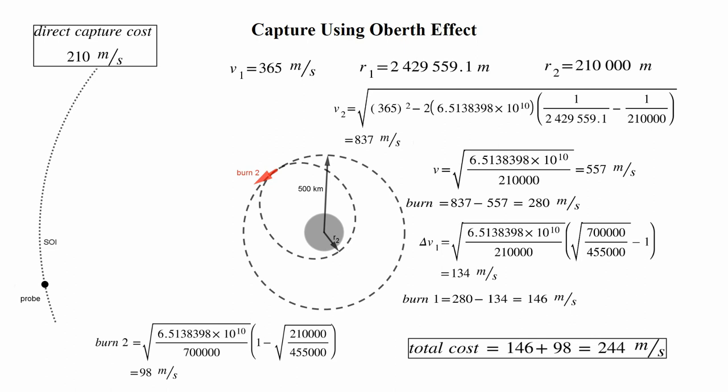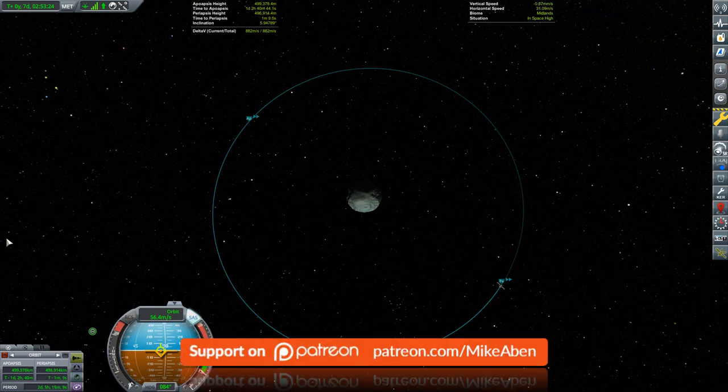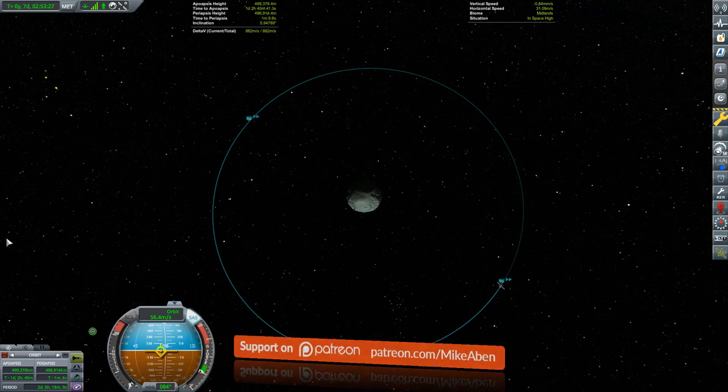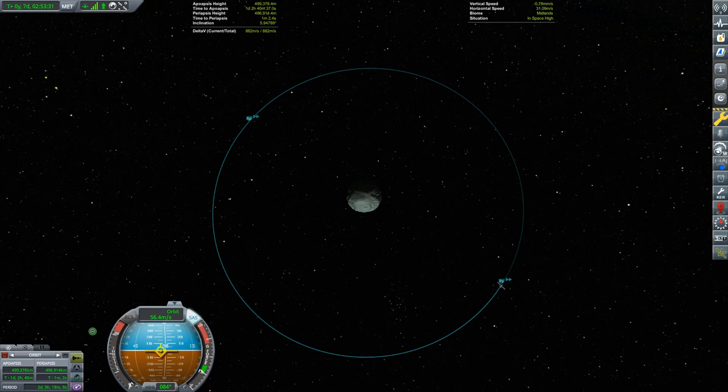Well hang on, we've only looked at one example. There may be times when it's still better to come in close to the parent body first. To help us answer this question, let's shift our attention to Minmus and calculate the cost of a 500 kilometer capture there. The process is exactly the same, so I'm going to go through this significantly faster. Just pause the video if you want to go over any of the calculations in more detail yourself. And don't hesitate to ask questions in the comments.